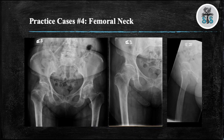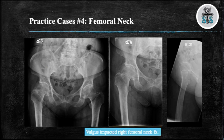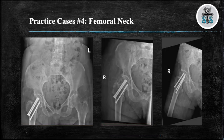Case 4: We have three views — AP pelvis, AP right hip, and cross table lateral of the right hip — demonstrating a valgus impacted right femoral neck fracture. This fracture was treated with three partially threaded cannulated screws.